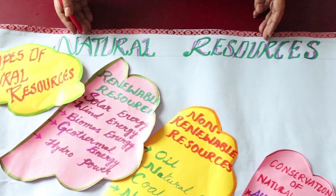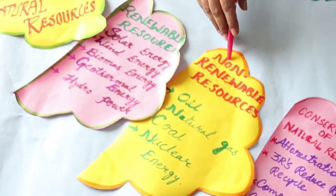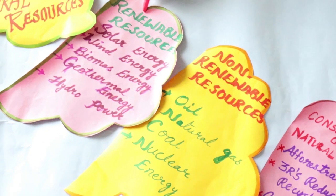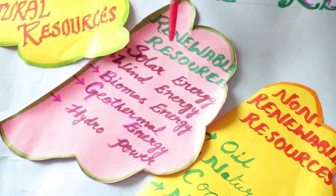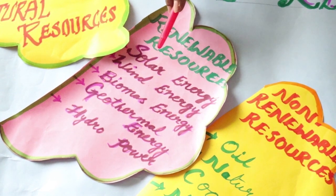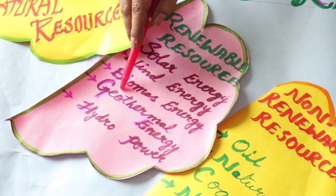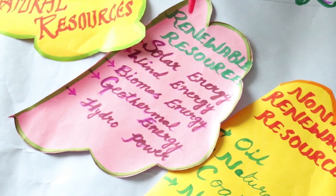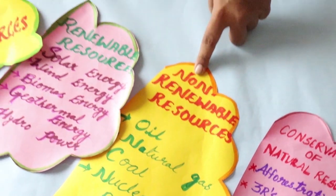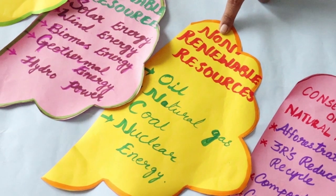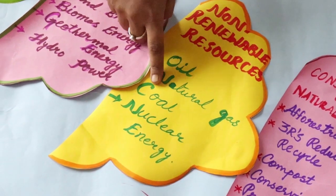Let's recapitulate. Natural resources are divided into two types: renewable resources and non-renewable resources. Renewable resources, also known as inexhaustible resources, can be used again and again. Some examples are solar energy, wind energy, biomass energy, geothermal energy and hydropower. Non-renewable resources, also called exhaustible resources, cannot be used again and again. Examples include oil, natural gas, coal and nuclear energy.